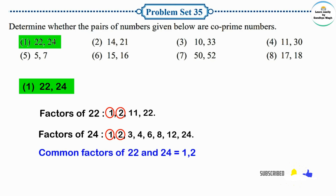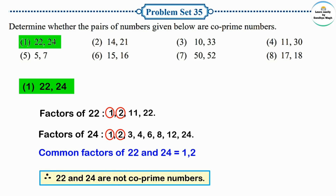Common factors of 22 and 24 are 1 and 2. Since there are two common factors — not just 1 — and 2 is also a common factor of 22 and 24, therefore 22 and 24 are not co-prime numbers.